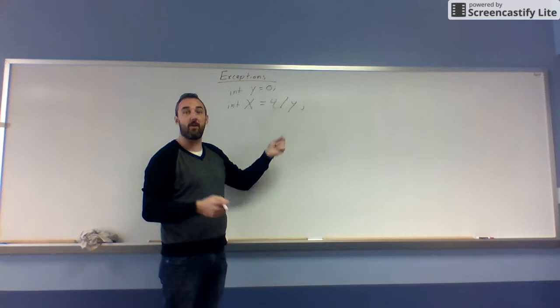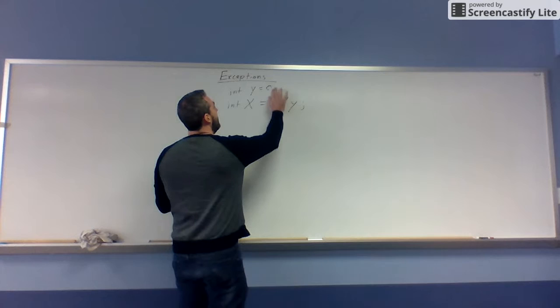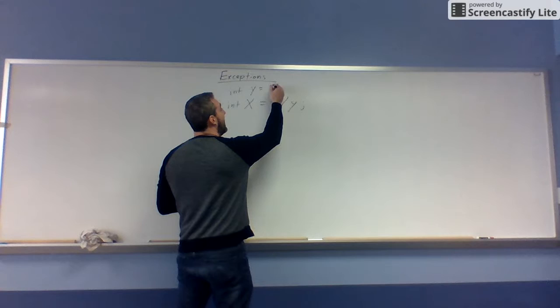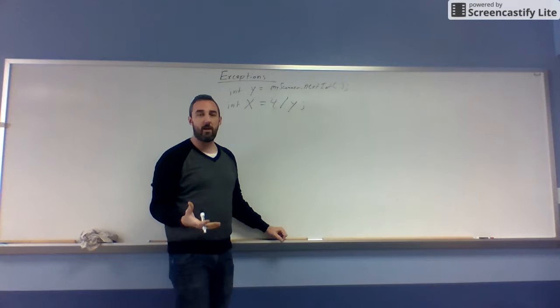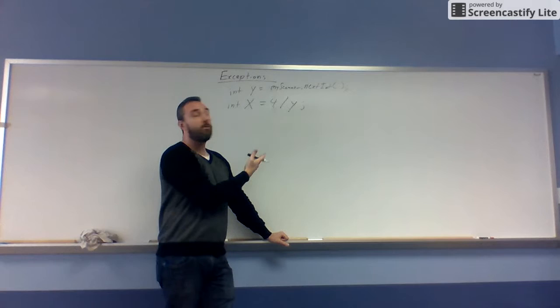The compiler is not going to look to see what values are there. Especially if, instead of having a zero written in there, what if I had some kind of scanner and asked it to get the next int from the keyboard? There's no way to know at compile time what's going to be typed in. So there's a chance a zero can be typed in, and that would break our program.